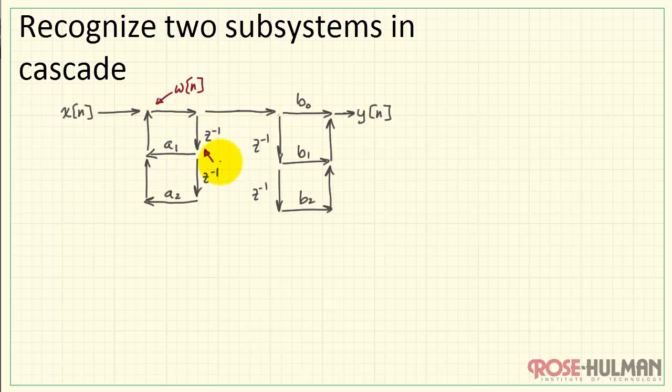When it passes through the first delay element, we have W of N minus 1. Now, as W of N travels along and passes through this delay element, it also produces W of N minus 1. From an efficiency standpoint, we see that we do have redundant delays. These two delays are actually producing the same result, therefore, they can be consolidated.